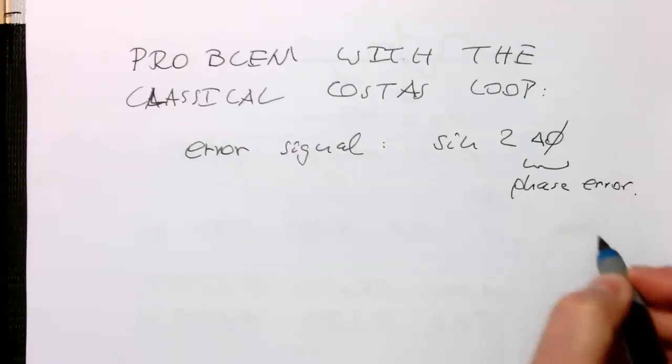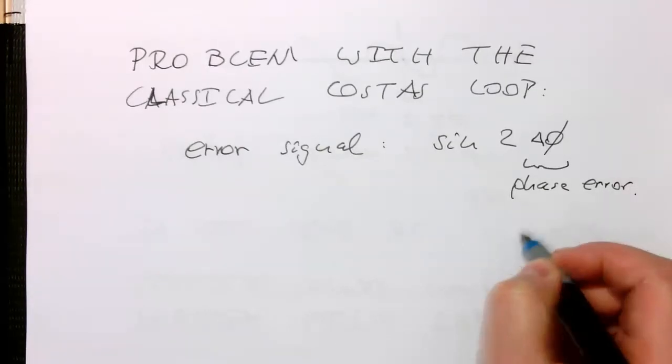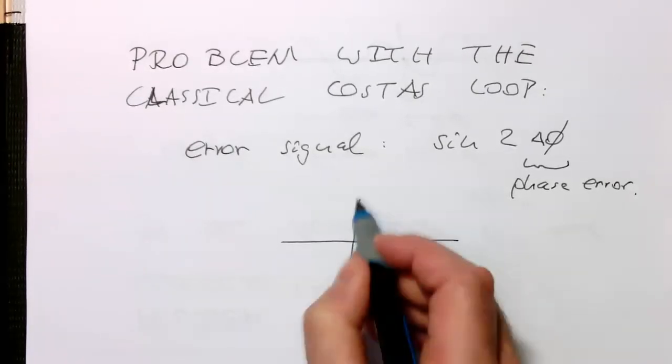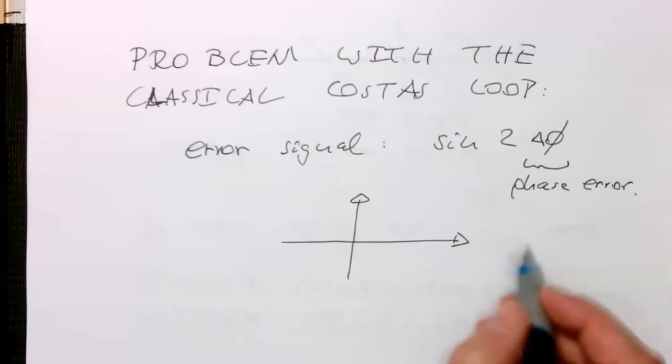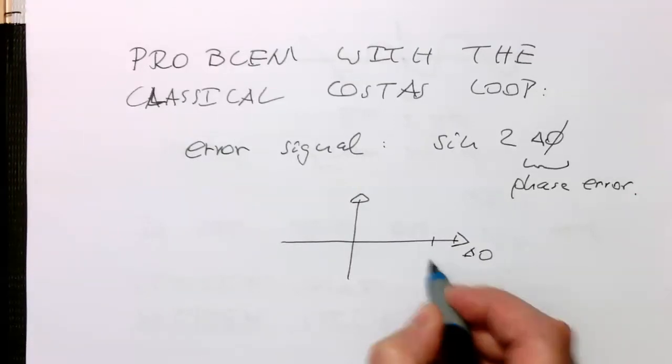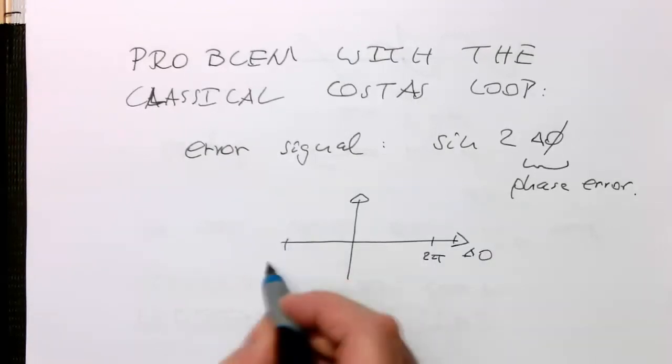Phase error between the input signal and the VCO signal. And so, obviously the phase error of the input signal and the output signal, so the delta phi runs between 0 and 2 pi, and minus 2 pi.